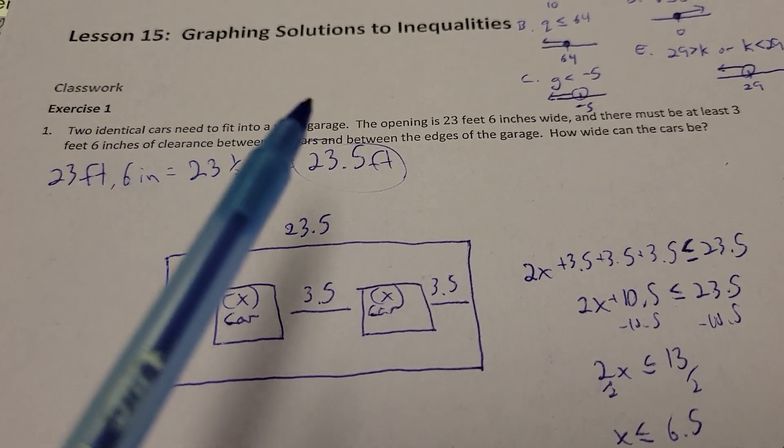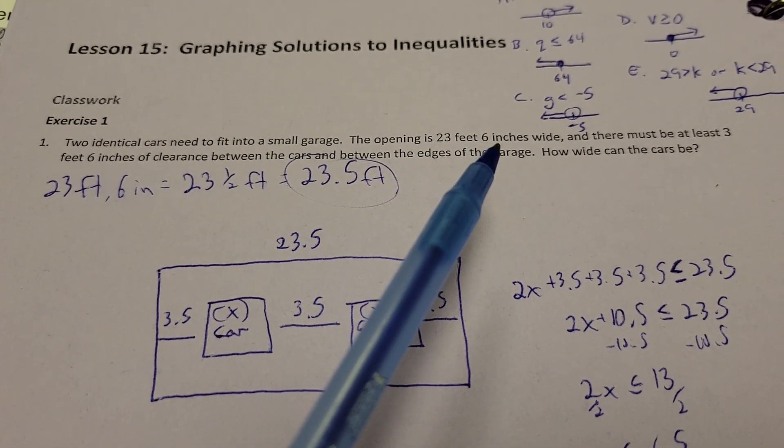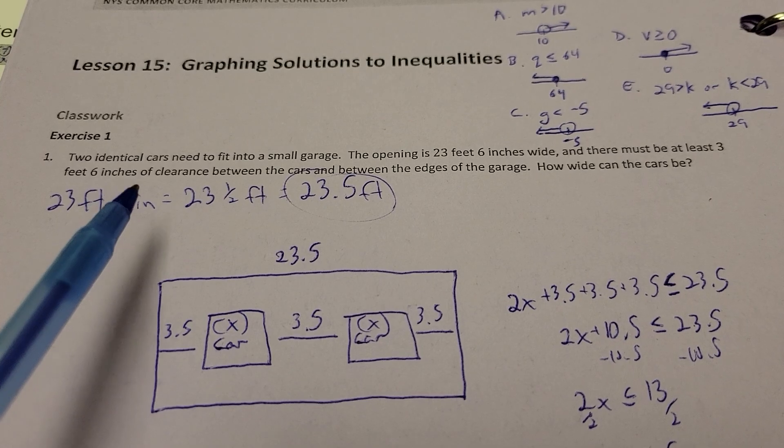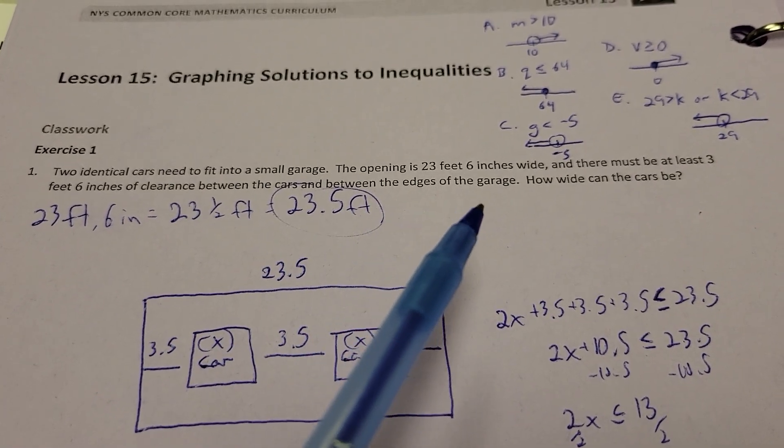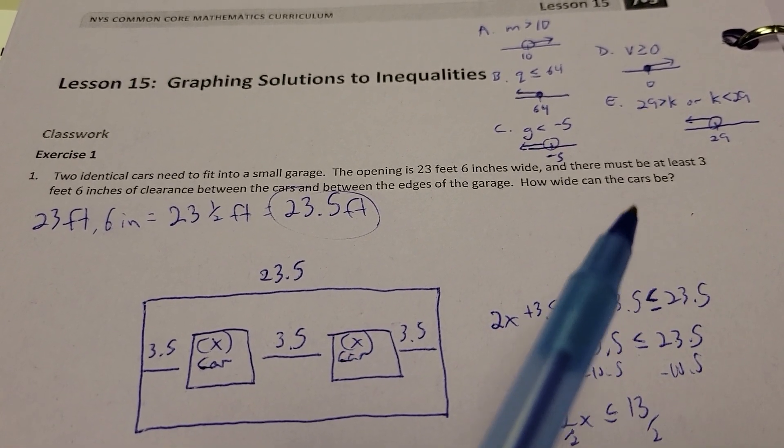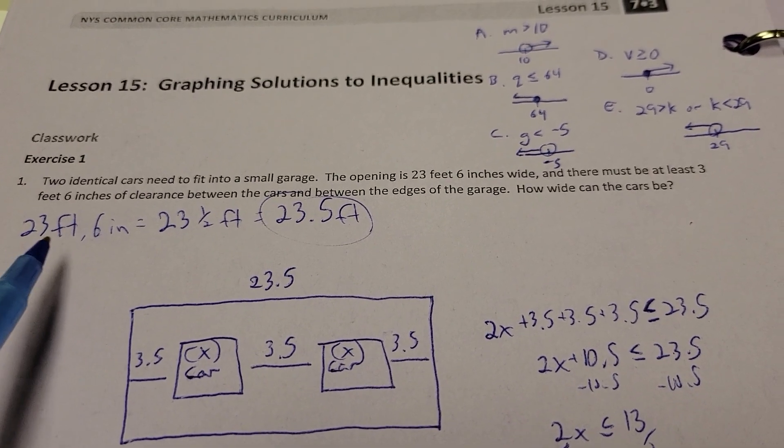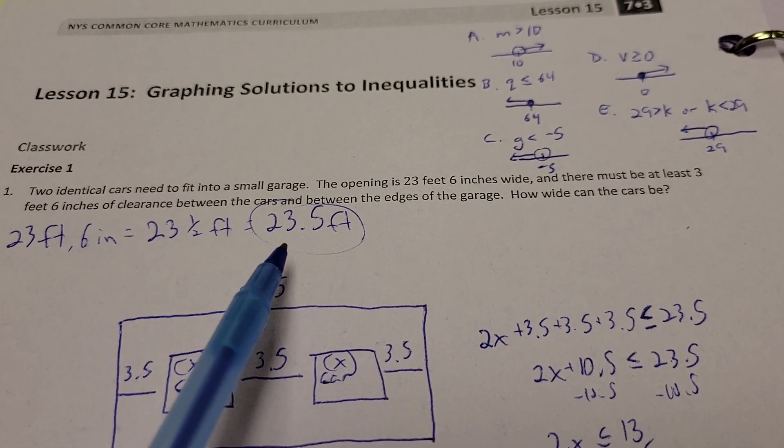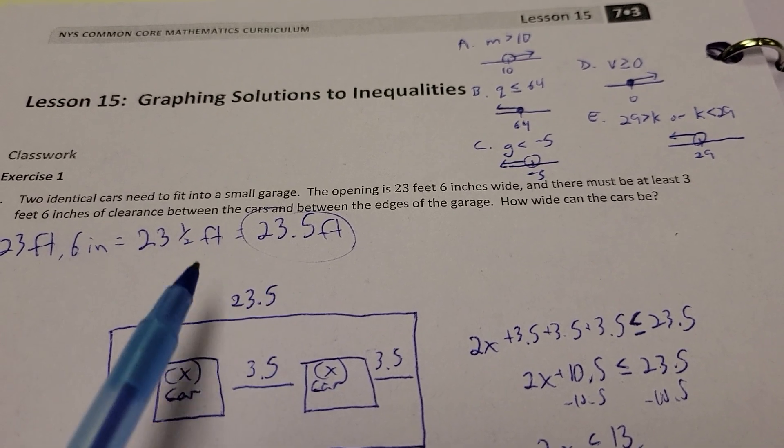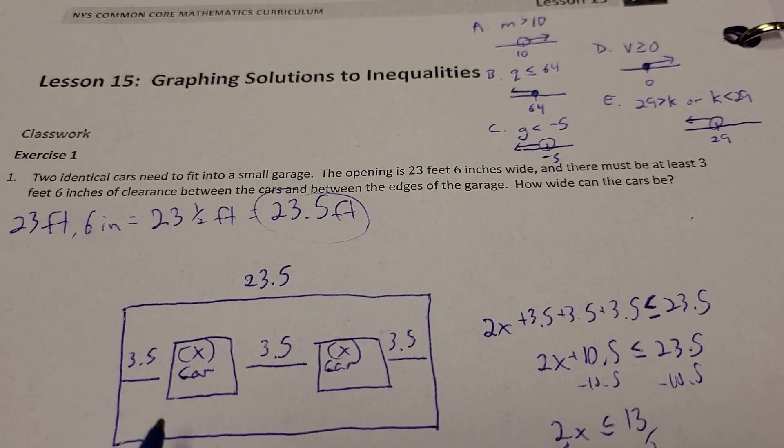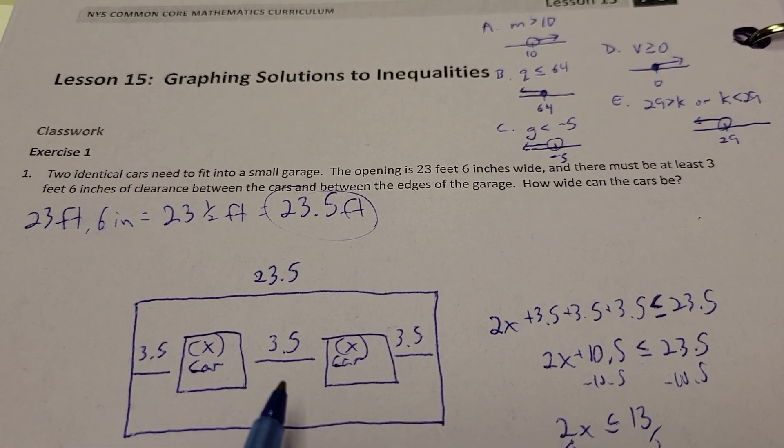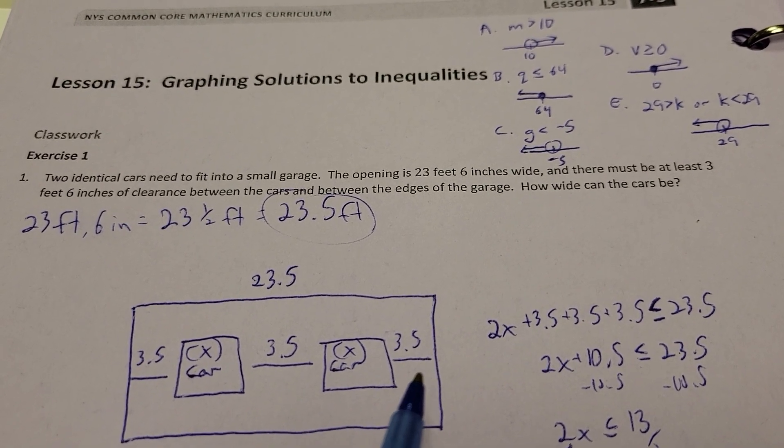Alright, here we go. Two identical cars need to fit in a small garage. The opening is 23 feet 6 inches wide, and there must be at least 3 feet 6 inches of clearance between the cars and the edges of the garage. How wide can the cars be? Now, 23 feet 6 inches, it really is like 23 and a half feet, or what we know as 23.5 feet.